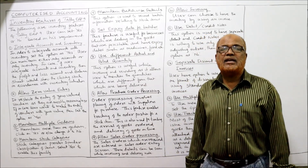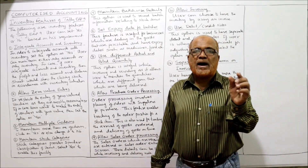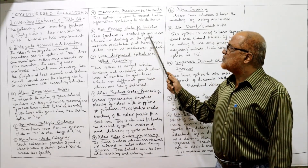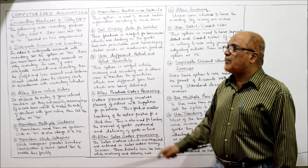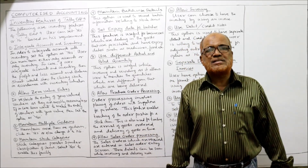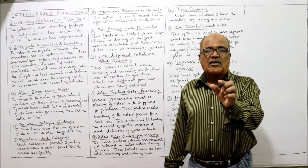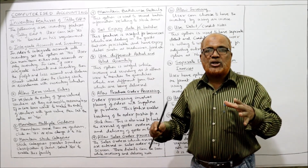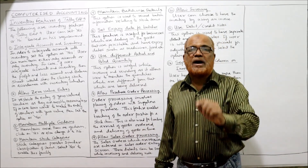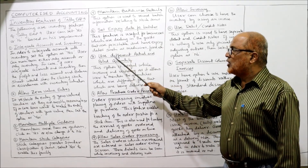The sixth feature is: set expiry dates for batches. This facility is useful for businesses dealing in perishable goods. For example, in the case of medicines or food items, goods will have an expiry date. Tally ERP 9 has the feature to fix expiry dates for such perishable items like medicines and food.